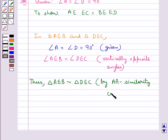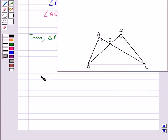And thus the corresponding sides would be in the same ratio. Therefore we have AE upon DE is equal to BE upon CE equal to AB upon DC.